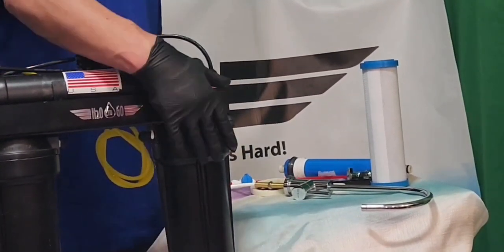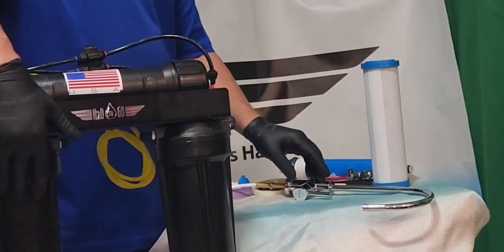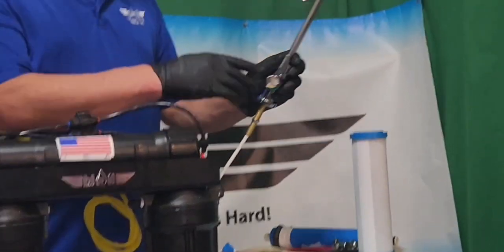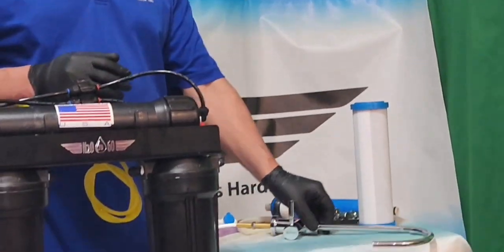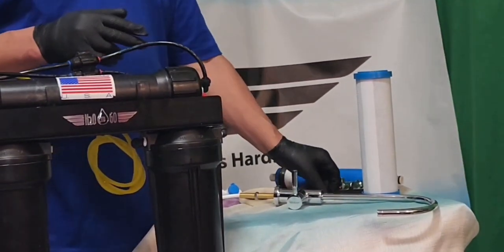Now, to relieve the pressure to help unscrew these canisters, what you want to do is take your faucet, put it on the on position. That'll relieve the pressure. That will help with the next step,